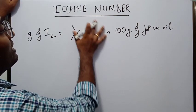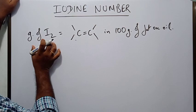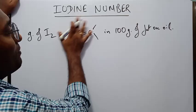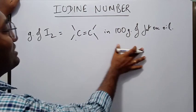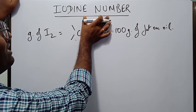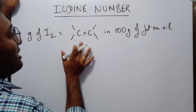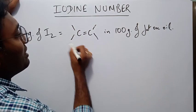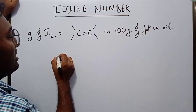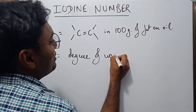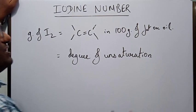If you react it with iodine you will get an addition product. The amount of iodine that has reacted is proportional to the amount of carbon-carbon double bonds present in the sample of oil or fat. That amount of reacted iodine is called the iodine number or iodine value. In other words, iodine number gives you an accurate idea of the number of carbon-carbon double bonds in the sample — it is a measure of degree of unsaturation.